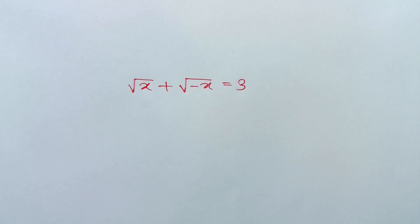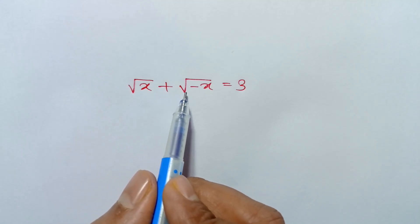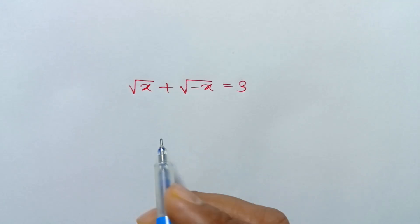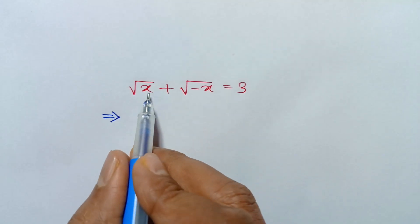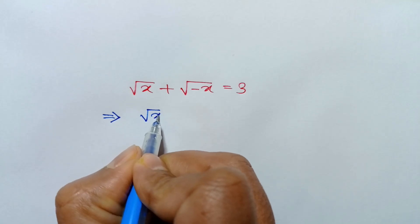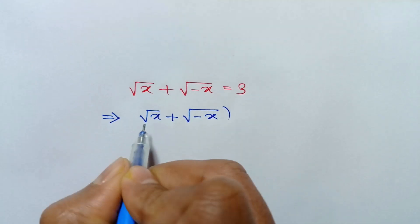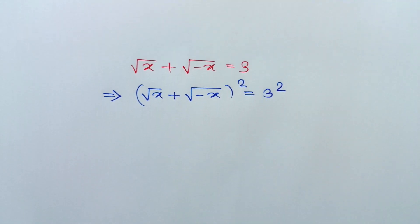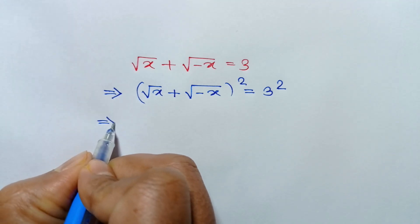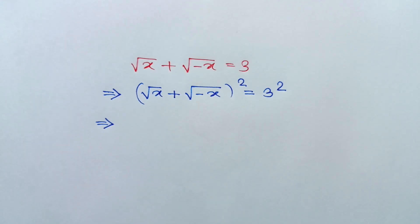Hi everyone. In this video I am going to show how to solve a square root of x plus a square root of negative x is equal to 3. Taking a square to both sides, we can write this as: the square root of x plus the square root of negative x, whole square, is equal to 3 squared. Applying the formula: a plus b whole square is equal to a squared plus twice ab plus b squared.